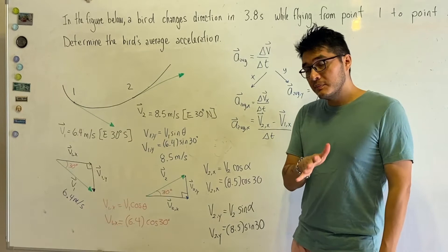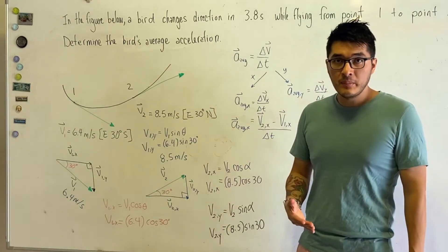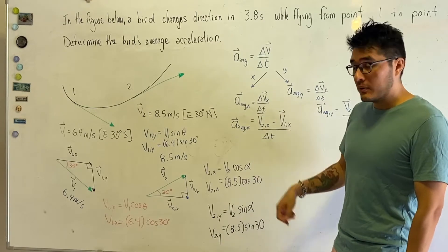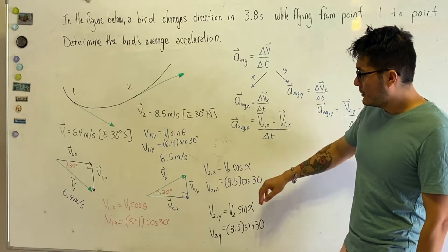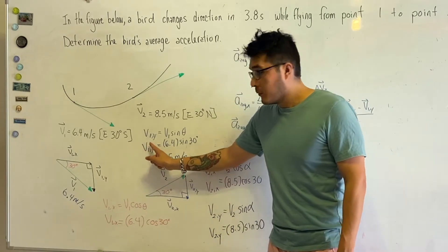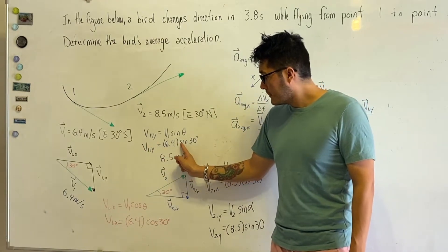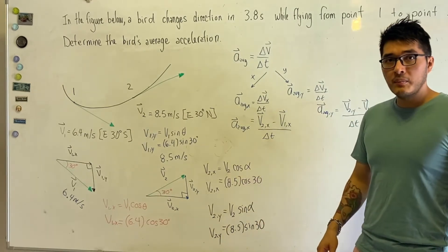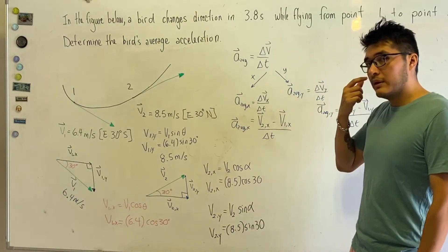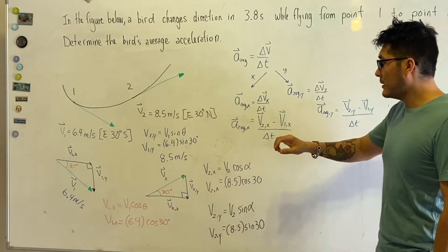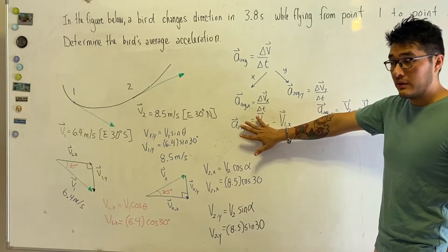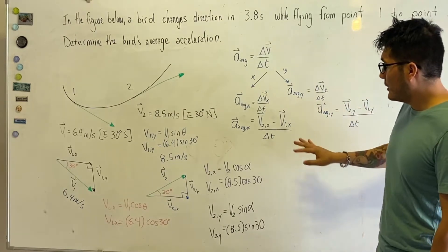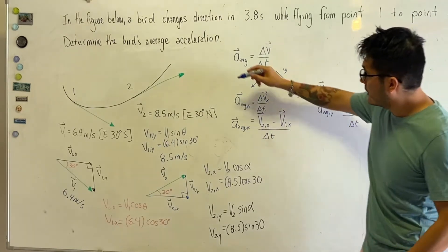You do need to know how to break vectors down into components — watch a previous video if needed. For v1x, v1y, v2x, and v2y we find the components. Now we're going to substitute these into the formulas for average acceleration along the x and average acceleration along the y.